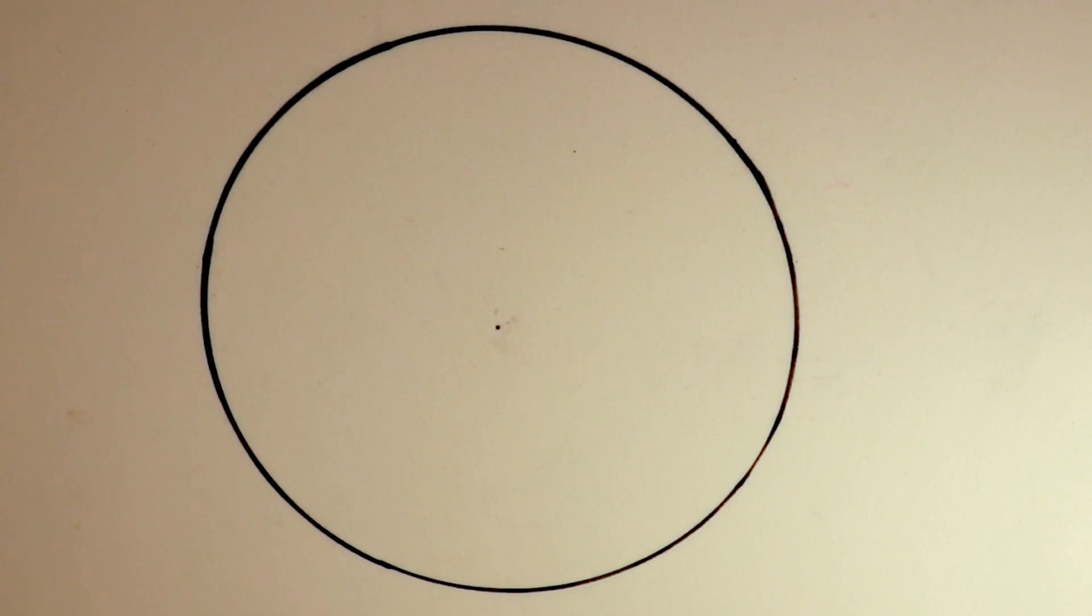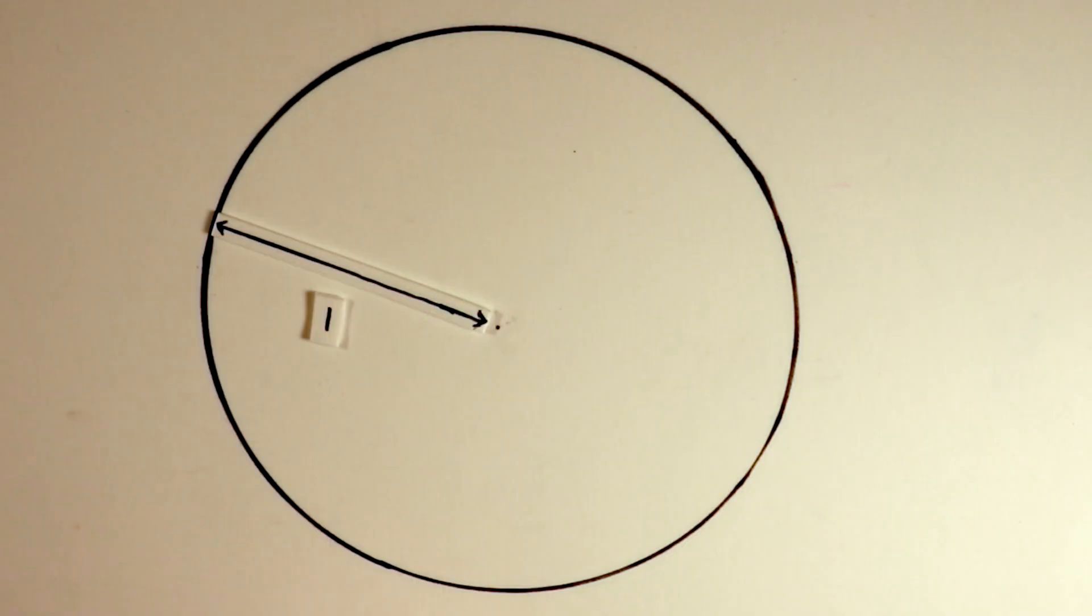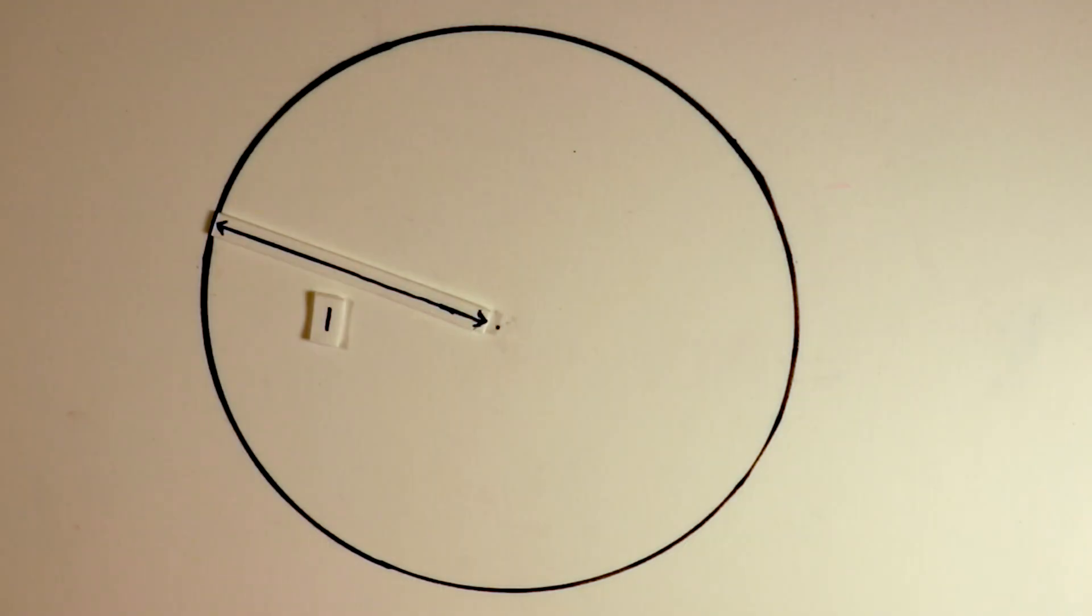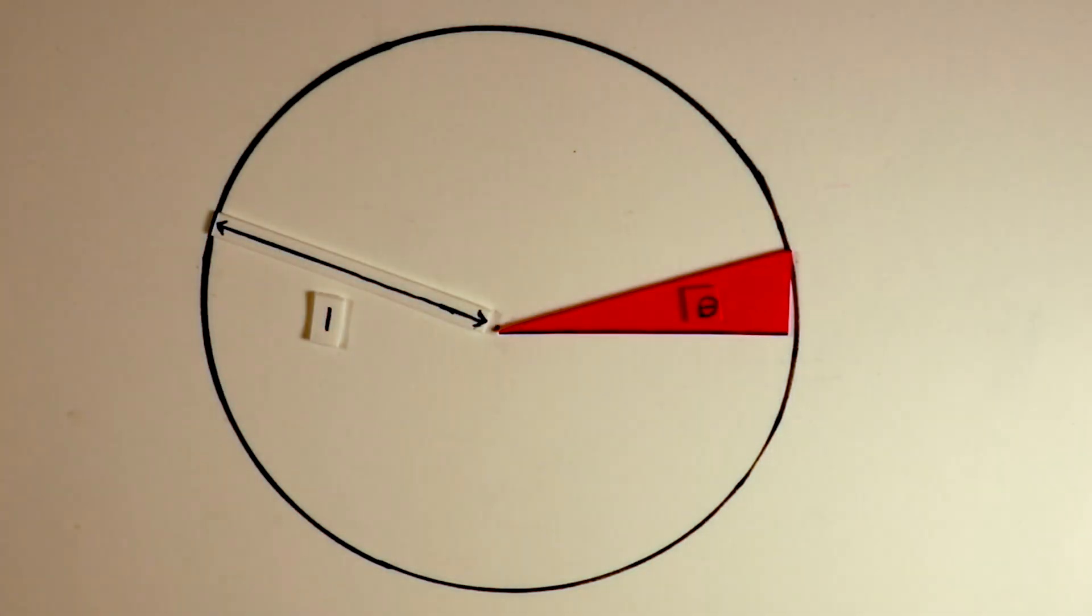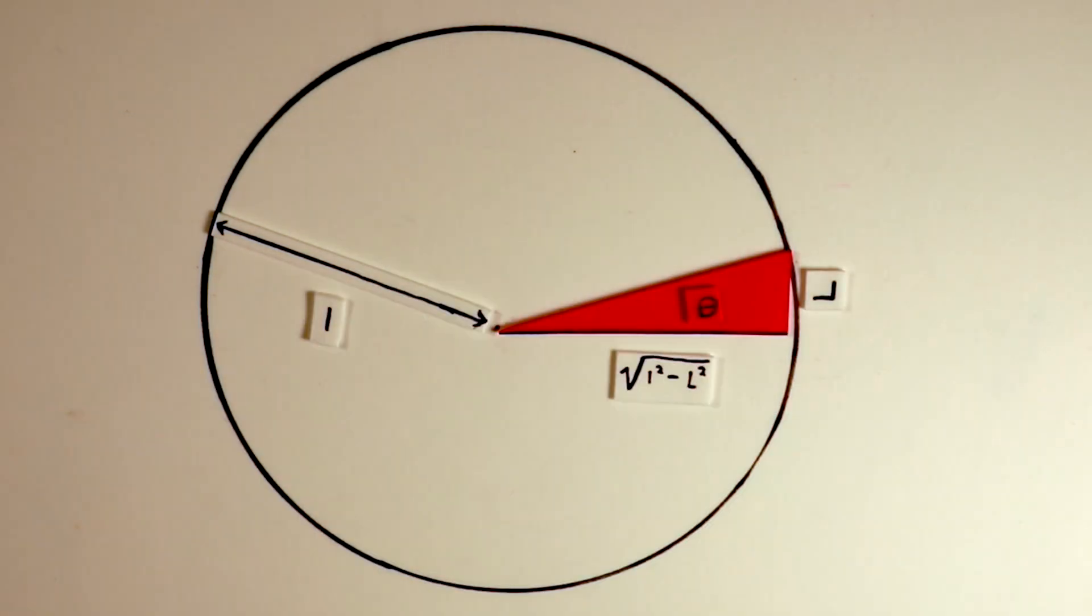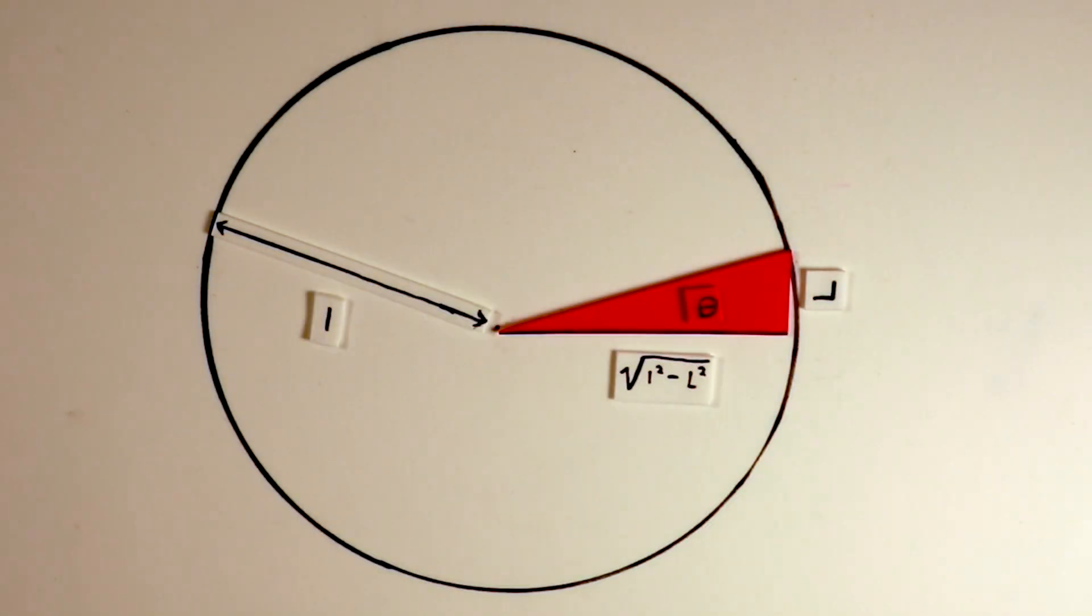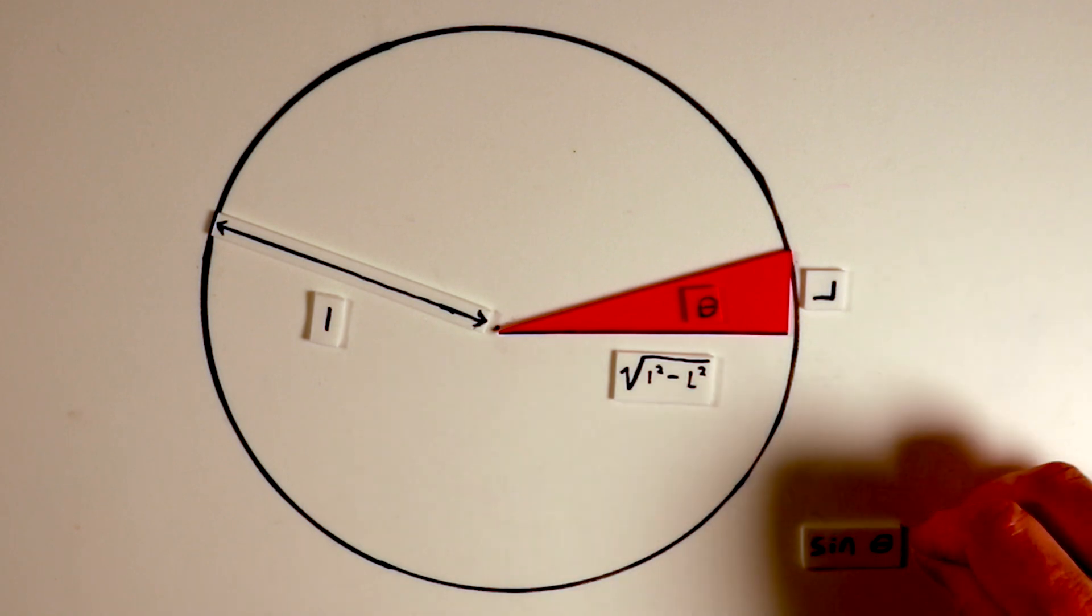Let's start by constructing a right triangle within a unit circle. Imagine the radius of the circle making an angle theta with the horizontal axis. Let's label the horizontal leg as the square root of 1 minus L squared, where L is the length of the vertical leg. Therefore, according to trigonometric definitions, the sine of angle theta is equal to L over 1, or simply L.